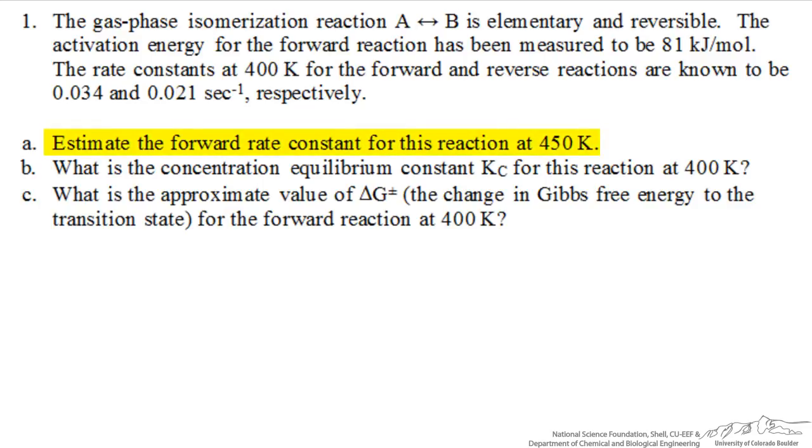In part A, we are asked to estimate the forward rate constant at a temperature of 450 Kelvin. We already know the rate constant at 400 Kelvin for the forward reaction is 0.034 reciprocal seconds. This is for the reversible reaction A goes to B.